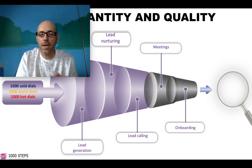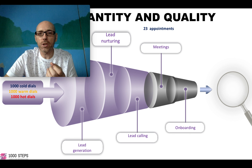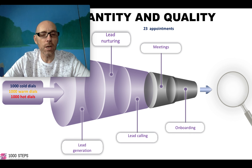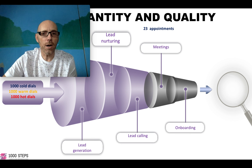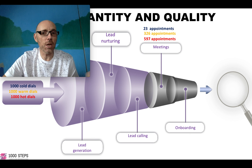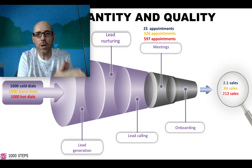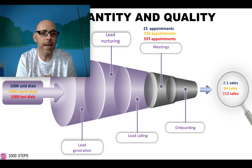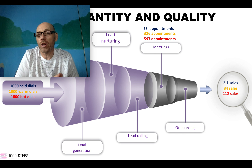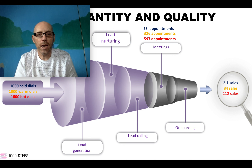Let's look at a thousand cold dials — this is a rough estimate, but a thousand cold dials might get you only 23 appointments. That's about one to two appointments per hundred dials — not many. If I have a warm name, I end up with one in three going to appointments. And if I have a hot name, six in ten go to an appointment. Those are good ratios. With 23 cold appointments, with cancellations, you might end up with two sales from ten appointments done.